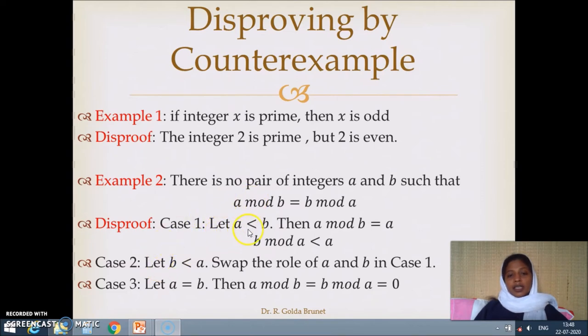The first case is a less than b. When a is less than b, what is a mod b? Since a is a smaller number which we are trying to divide by a bigger number, this a will appear as the remainder. So, a mod b will be equal to a when a is less than b.